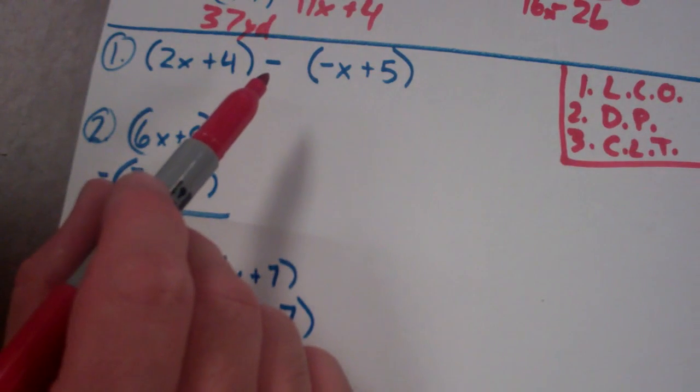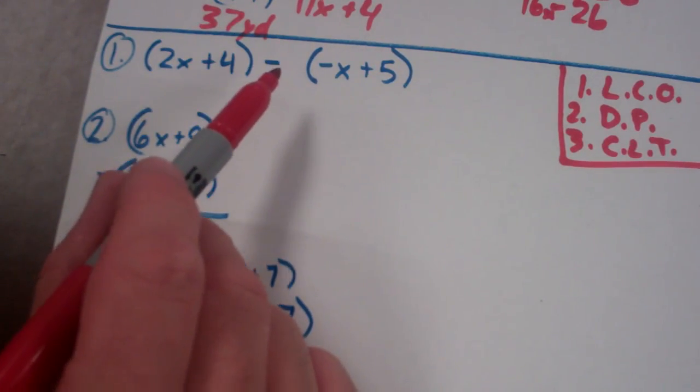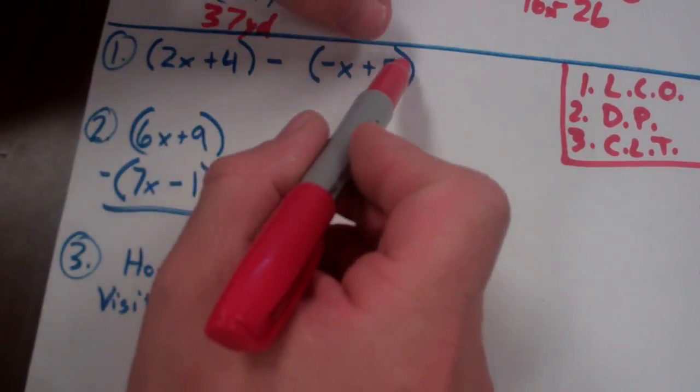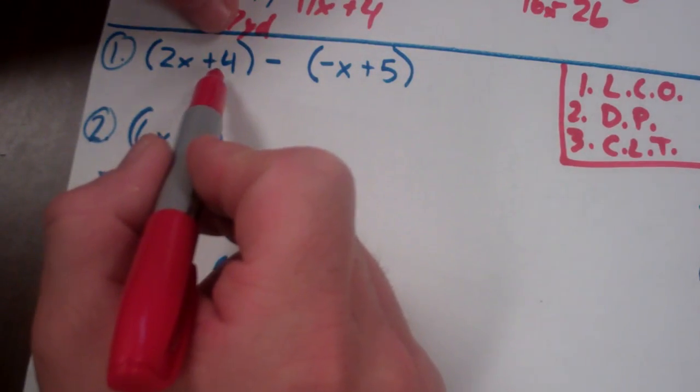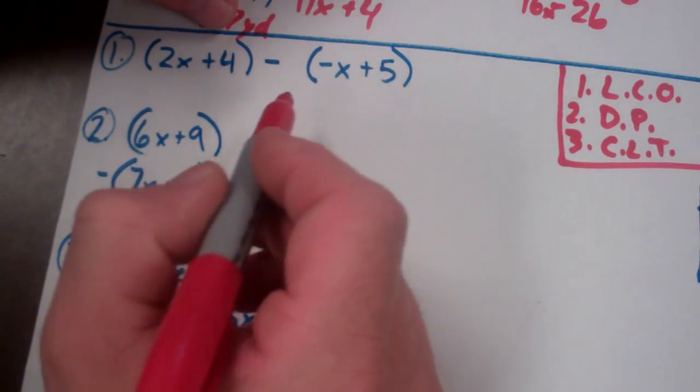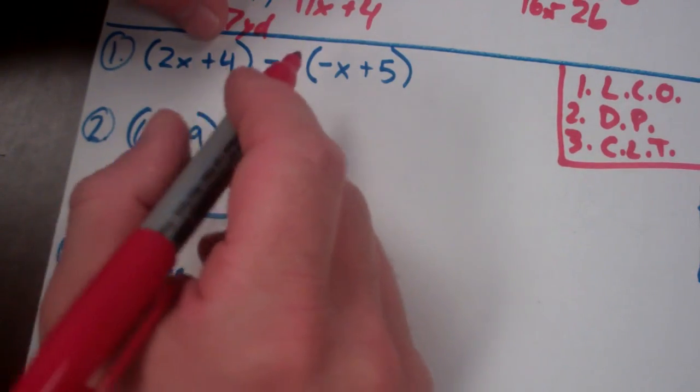So here's probably the biggest mistake here is when I talked about people not getting that negative distribution. Remember, this entire quantity is being subtracted from this quantity. So some people will just subtract the first one, but not all of them. So you have several different ways of doing that.